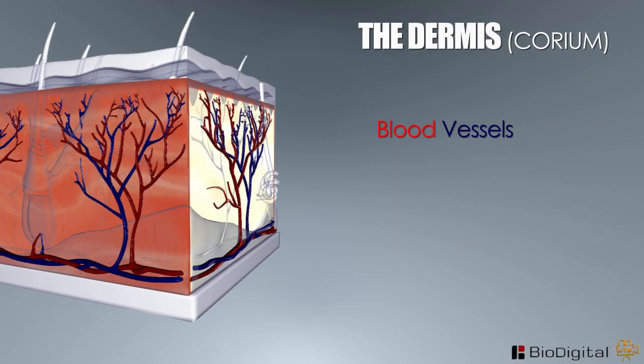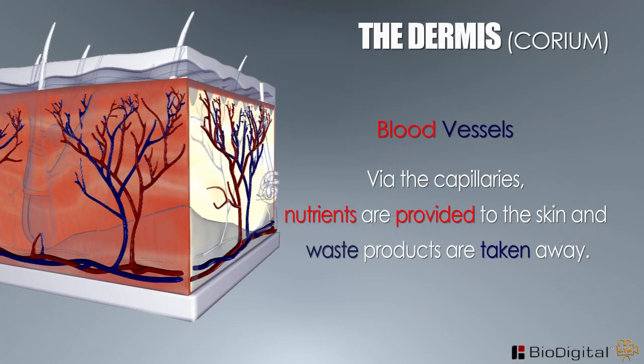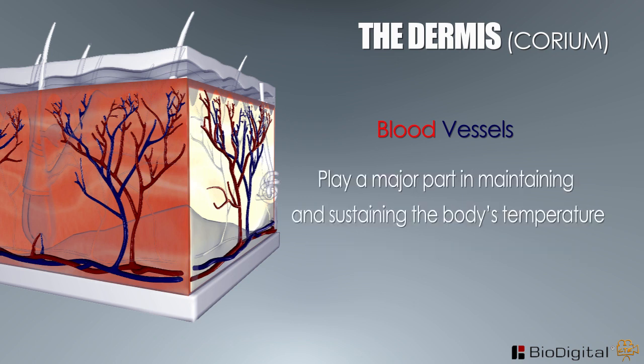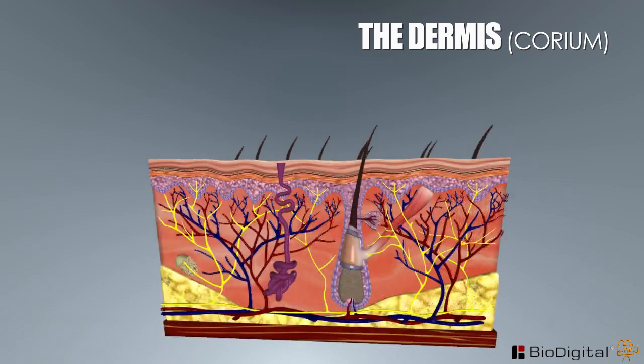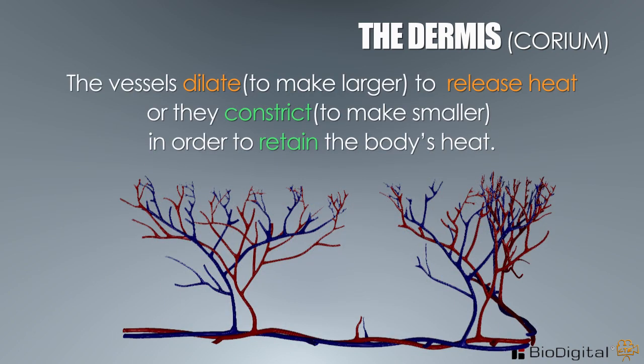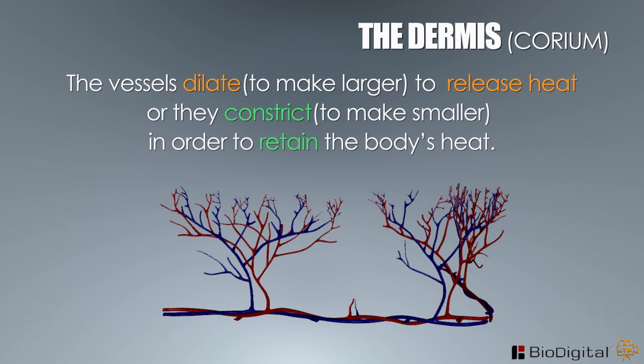Blood vessels — via the capillaries, nutrients are provided to the skin and waste products are taken away. These blood vessels also play a major part in maintaining the body's temperature for optimal functioning. The vessels dilate to release heat or constrict in order to retain the body's heat.